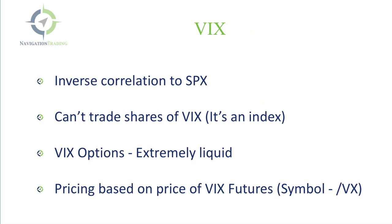A few things to know about the VIX: it's typically inversely correlated to the SPX or S&P 500 index. The VIX is priced based on options of the SPX. When the S&P 500 is going up, the VIX is typically going down, and when the S&P 500 is going down with more uncertainty in the marketplace, you'll often see a spike higher in VIX. You can't trade shares of VIX — it's an index just like SPX or RUT — however it does have options that are extremely liquid.